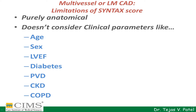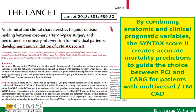The limitation of the SYNTAX score is that it is purely anatomical and does not consider clinical parameters like age, sex, LV ejection fraction, diabetes, peripheral vascular disease, kidney function, or chronic obstructive pulmonary disease. By combining anatomic and clinical prognostic variables, a landmark article published in the Lancet introduced the SYNTAX Score 2, which includes clinical parameters along with anatomical parameters to predict long-term outcomes and mortality in patients with multivessel coronary artery disease. It is helpful to guide the choice between PCI and bypass for patients with multivessel or left main coronary artery disease.